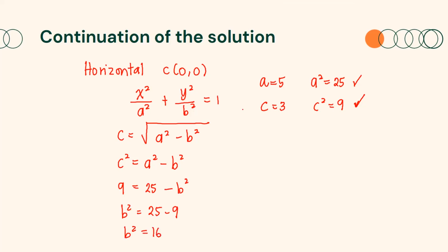Finally, we can use the values of a² and b² in the standard form of the equation. Therefore, the standard form of the equation will be x² over 25 plus y² over 16 equals 1.